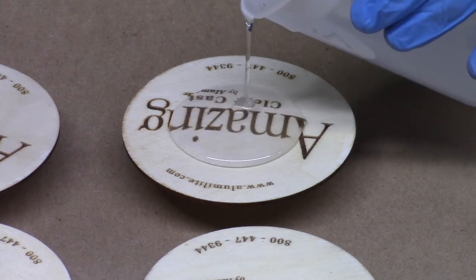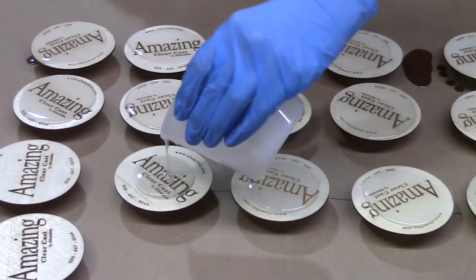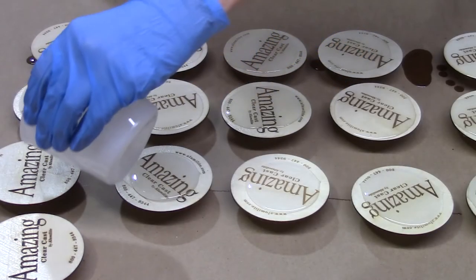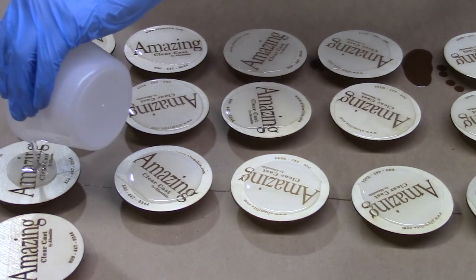Once mixed, you can begin pouring on top of your wood pieces. You want to pour enough on so that it begins to self-level and ultimately reaches the edges.